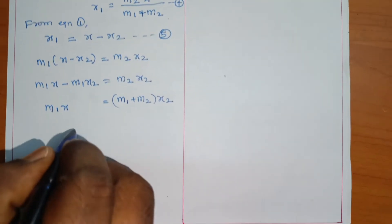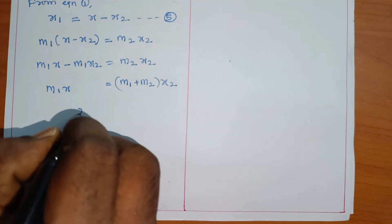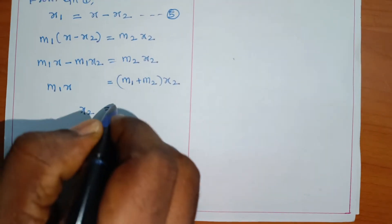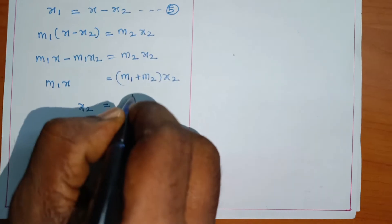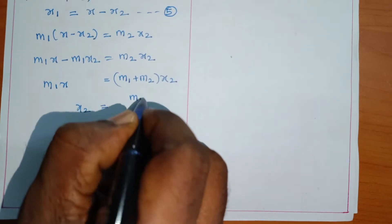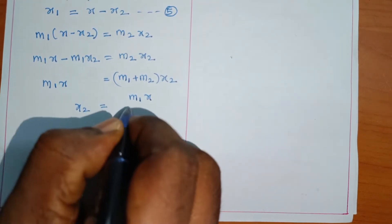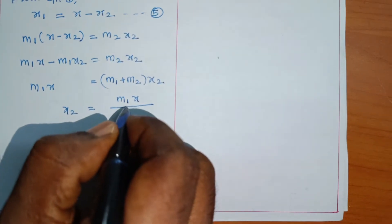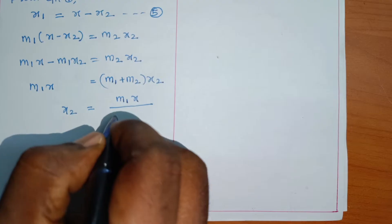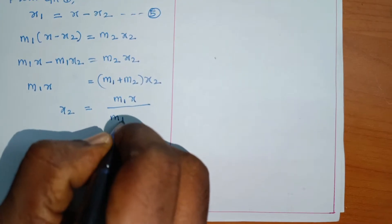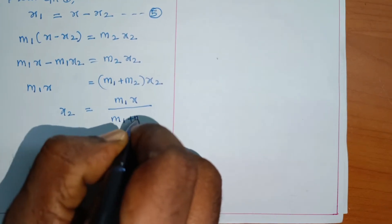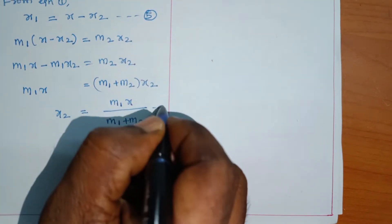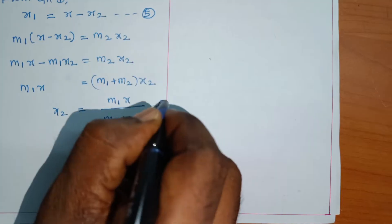Therefore x2 equals m1·x divided by m1 plus m2. This is equation number 6.